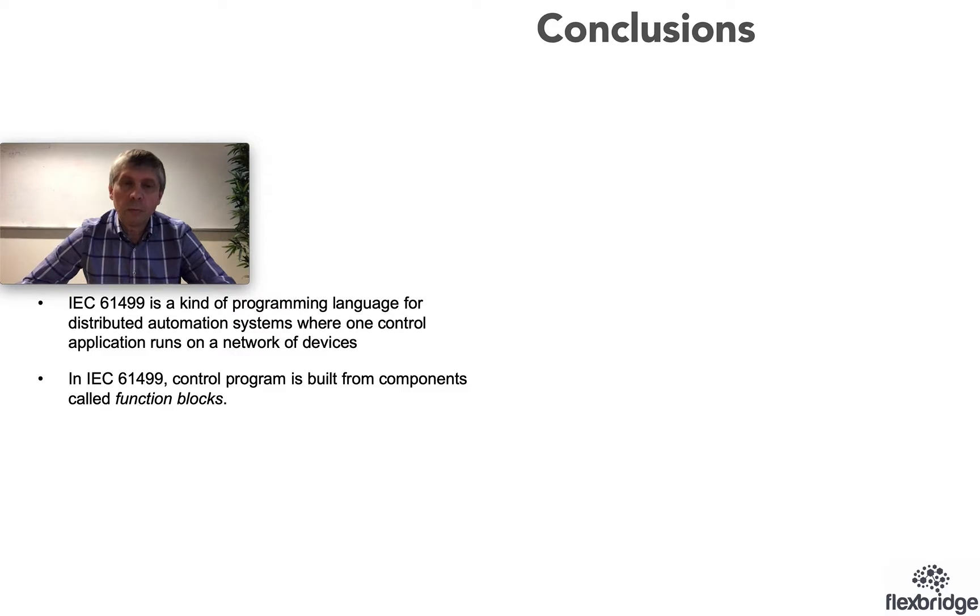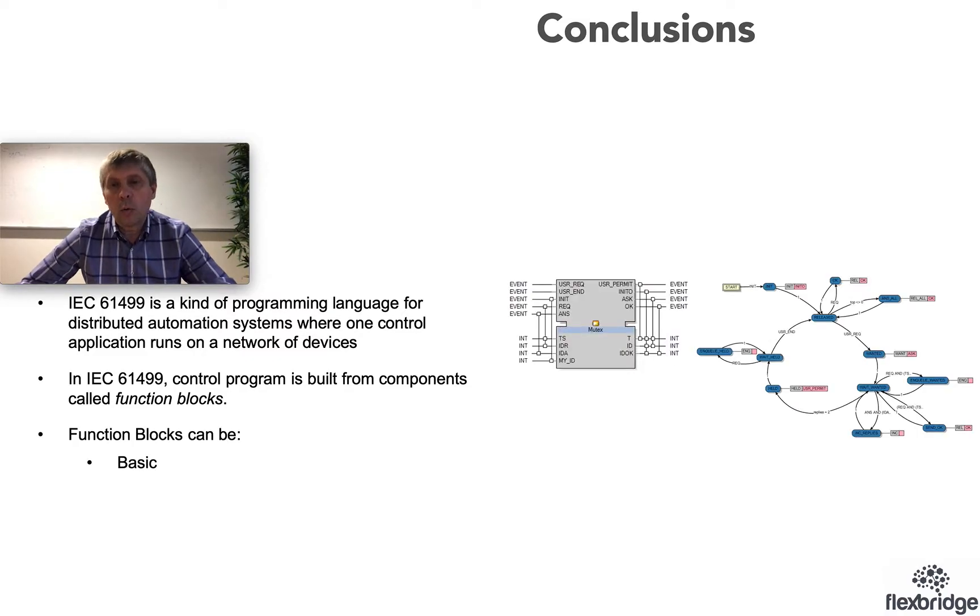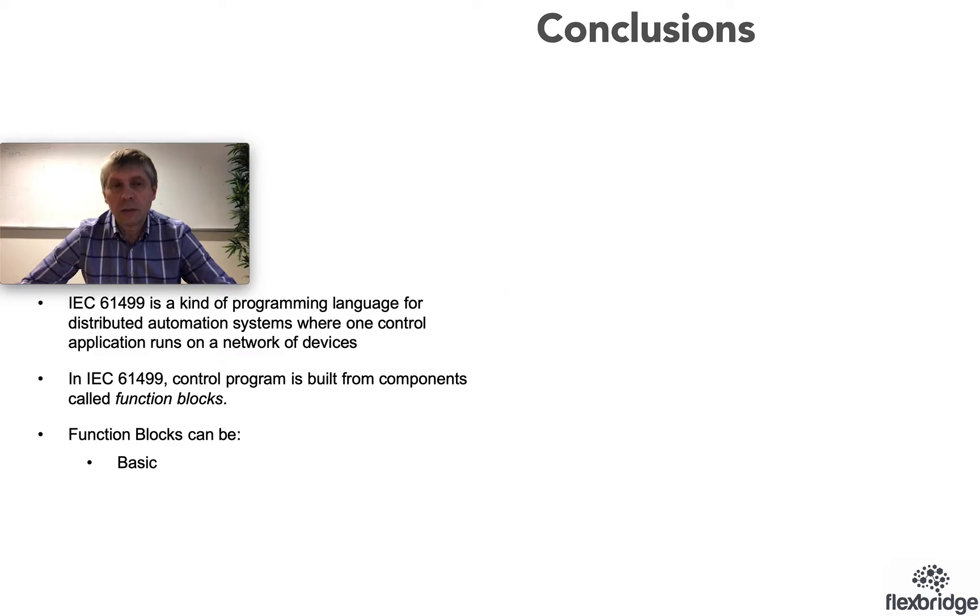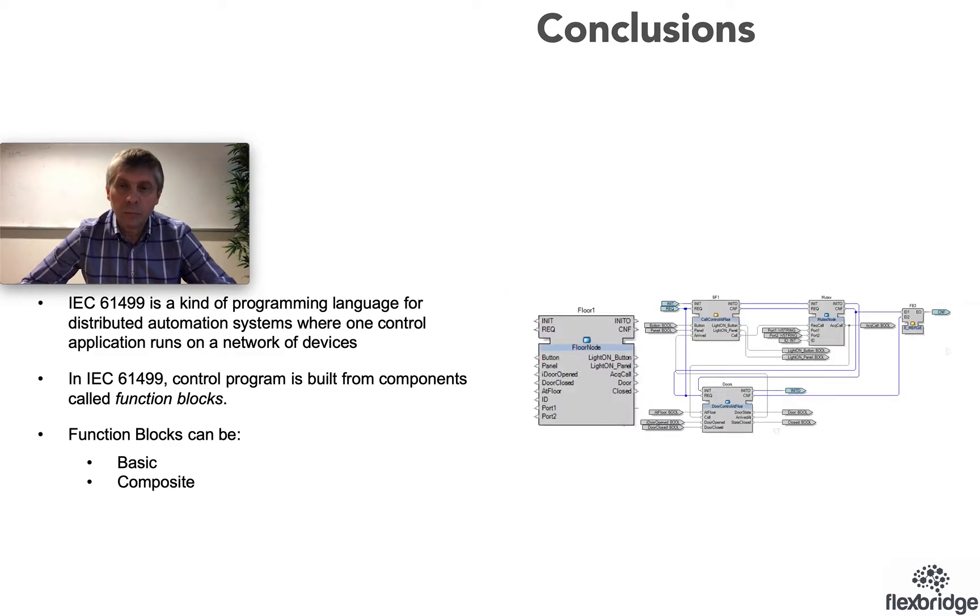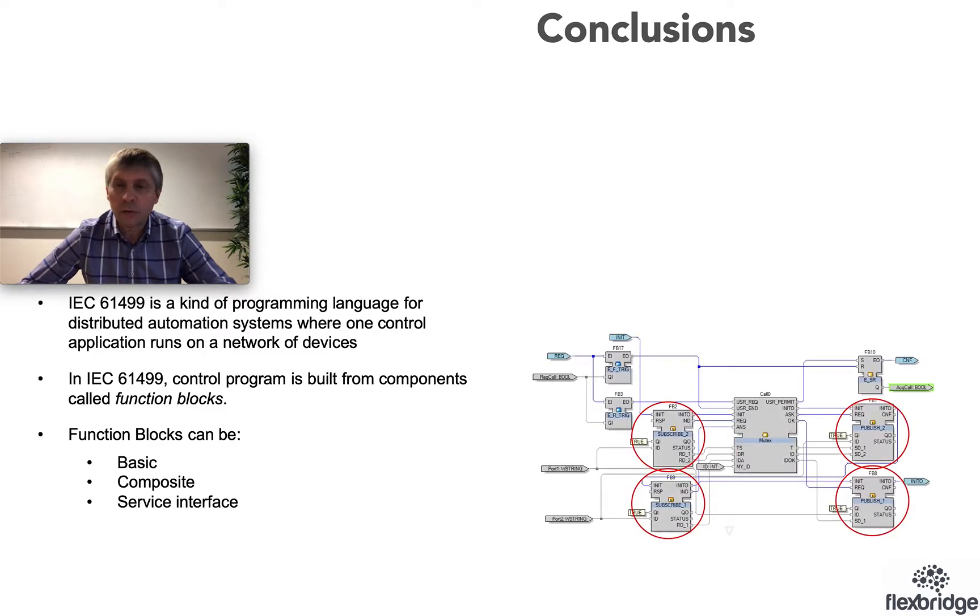Function blocks can be basic, where the block is defined as a state machine, can be composite, where the block is defined as a network of other function blocks, and can be a service interface, where service interface function blocks are usually provided by vendors of devices and application developers just use them from the library without seeing what is inside. They are usually written in some other way not approachable by application developers.